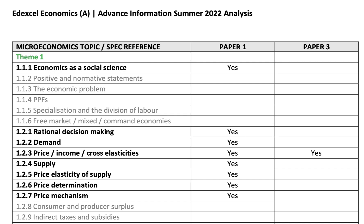Paper two is macro, drawing on themes two and four. And paper three is the synoptic paper, where you have two essentially hybrid data response and essay questions — one largely micro, one macro — but obviously with a mixture of micro and macro questions. Paper three is sat in the middle or early June.